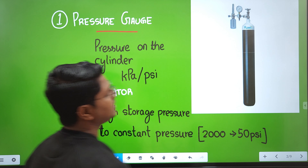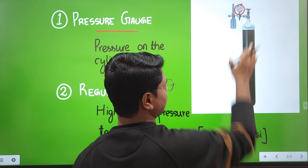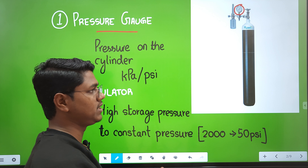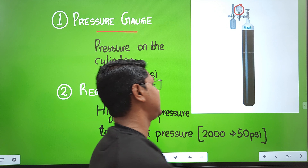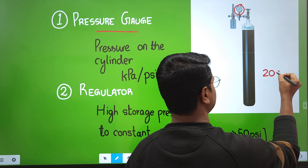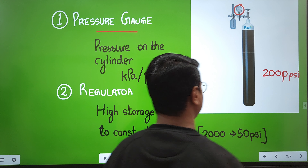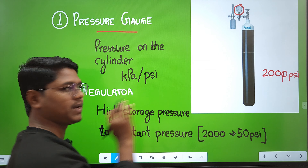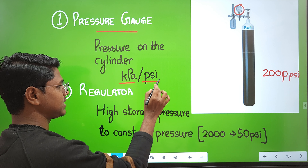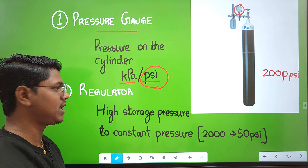The pressure gauge denotes the pressure inside the cylinder. All commercial oxygen cylinders are provided under 2000 PSI (pounds per square inch). Pressure is usually expressed in kilopascal or PSI; in India, PSI is used more frequently.